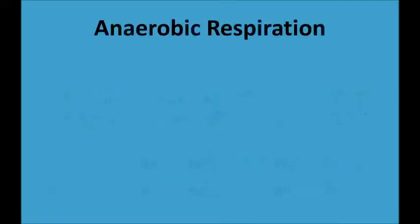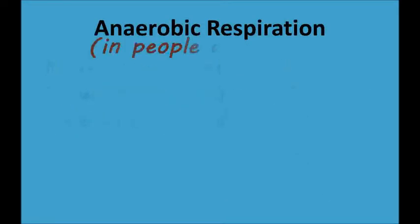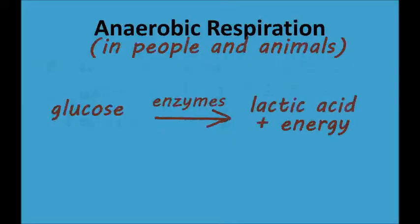Let's move on now to anaerobic respiration. There are actually a couple of different equations for anaerobic respiration, depending on the type of organism in which it occurs. We'll start by looking at the equation for anaerobic respiration in people and animals. You can see from this equation that there's only one ingredient for anaerobic respiration, and that's glucose. The main difference between aerobic and anaerobic respiration is that anaerobic respiration doesn't require oxygen. If you're running really fast, your breathing rate may not be fast enough to meet your body's increased need for oxygen, but the muscle cells in your body can use anaerobic respiration to get the energy they need without oxygen.